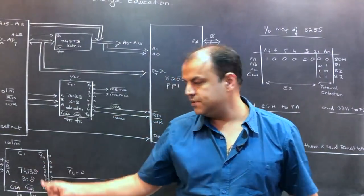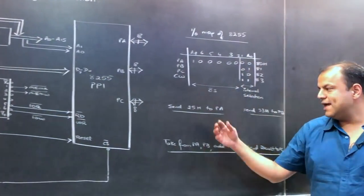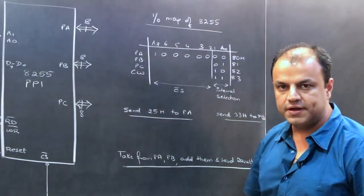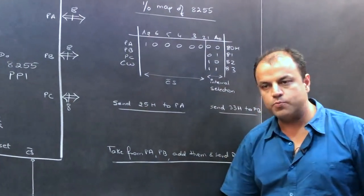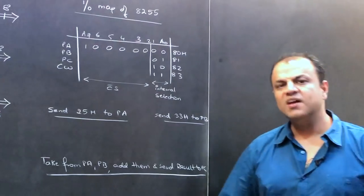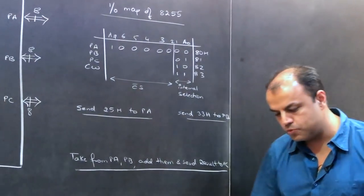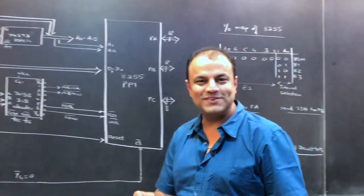You make your IO map. You do your decoding. And then what we're going to do finally is some simple program showing how this whole circuit works, how to transfer some data to port A, how to transfer some data to port B. A better program, take data from port A and port B, add the two, put the result out on port C, etc. So that's what is going to happen in this video.